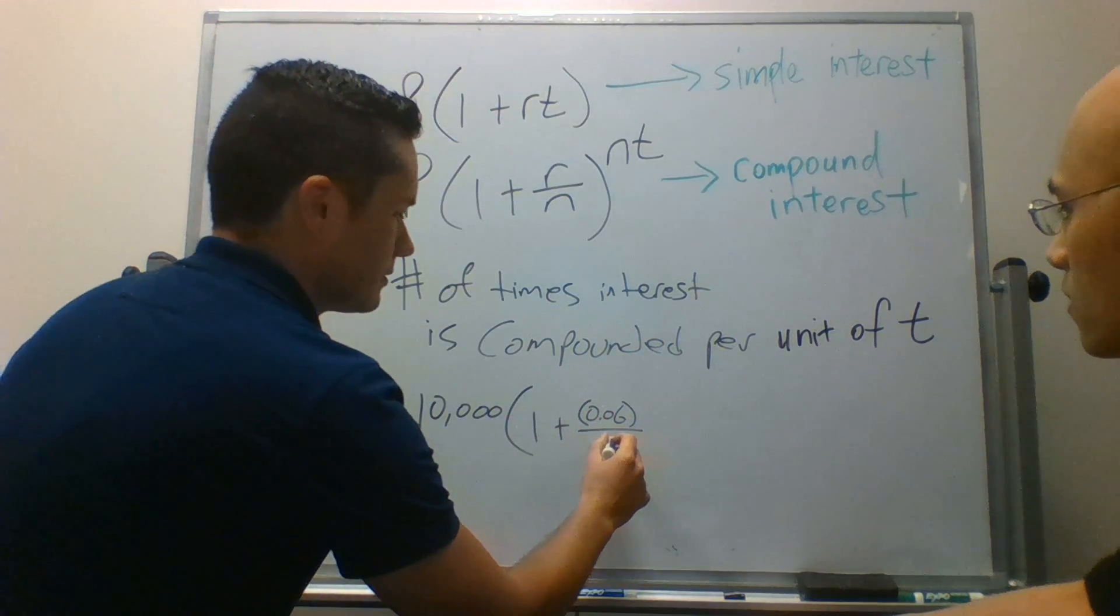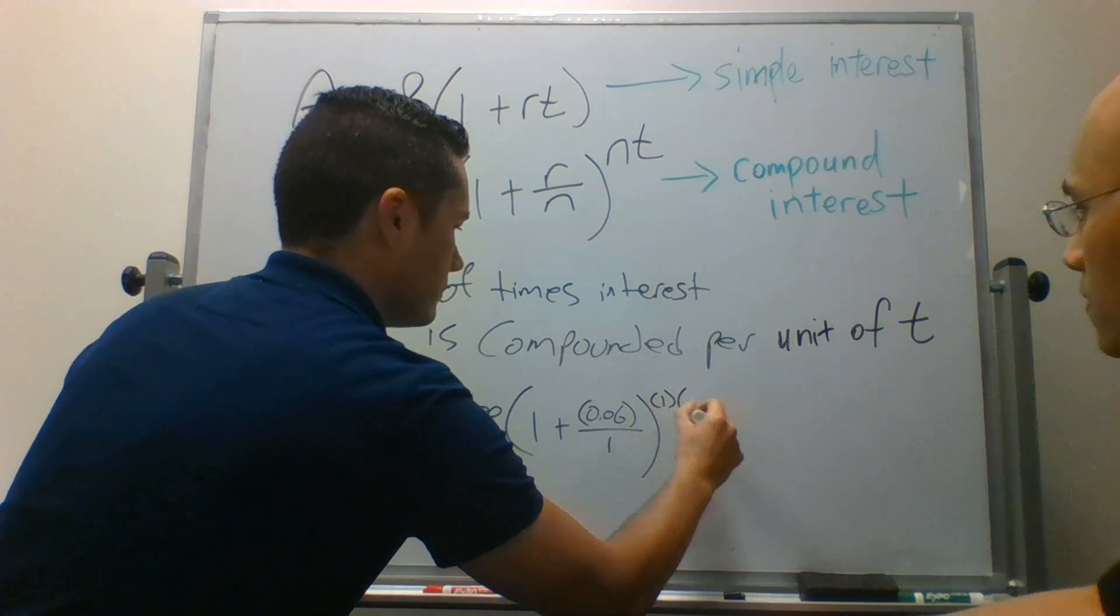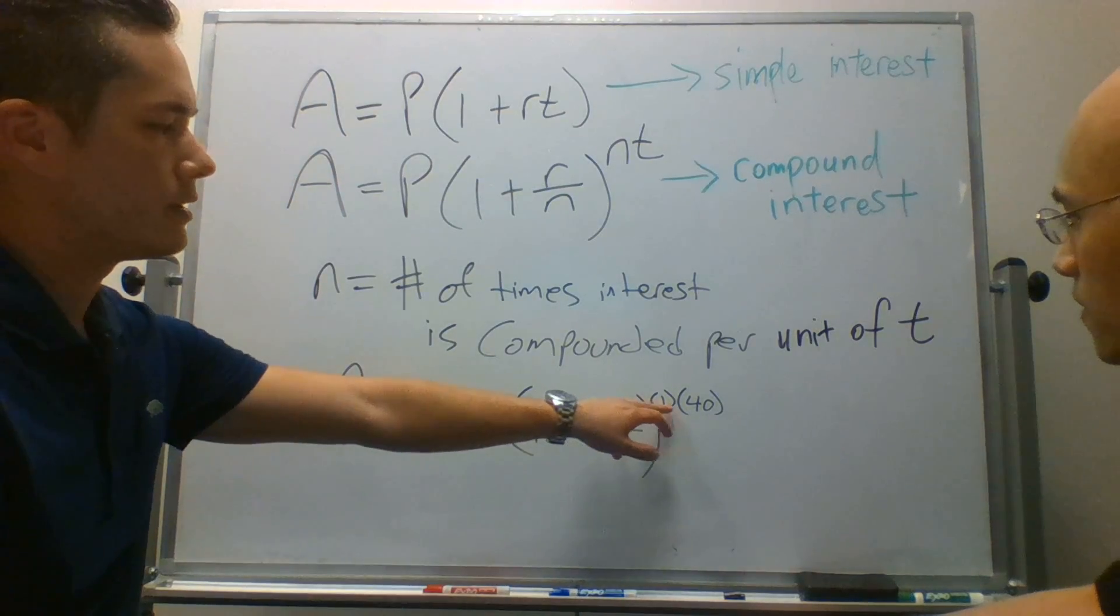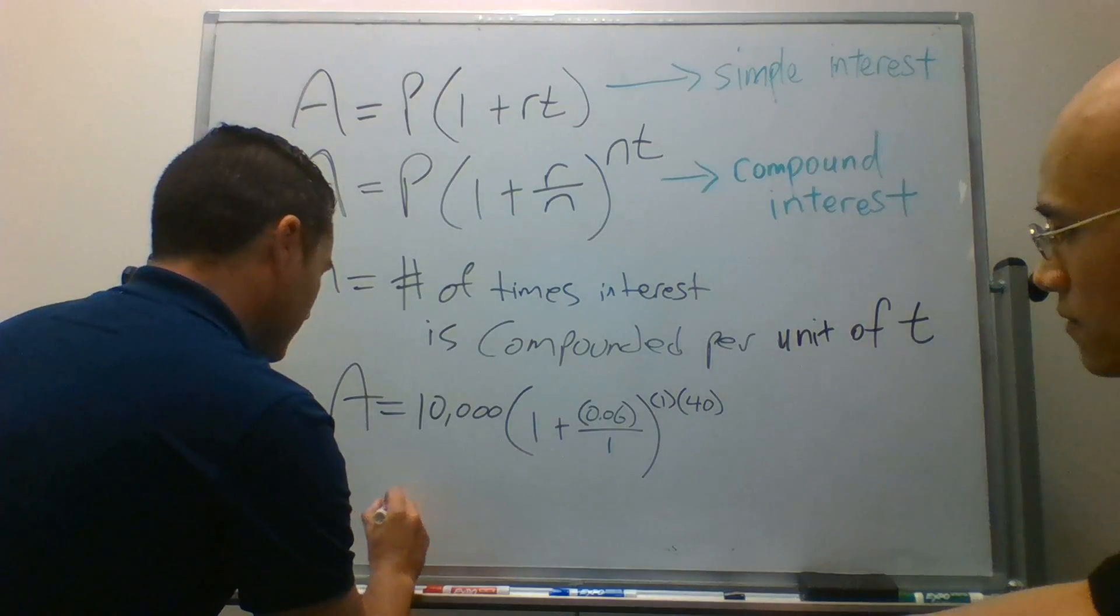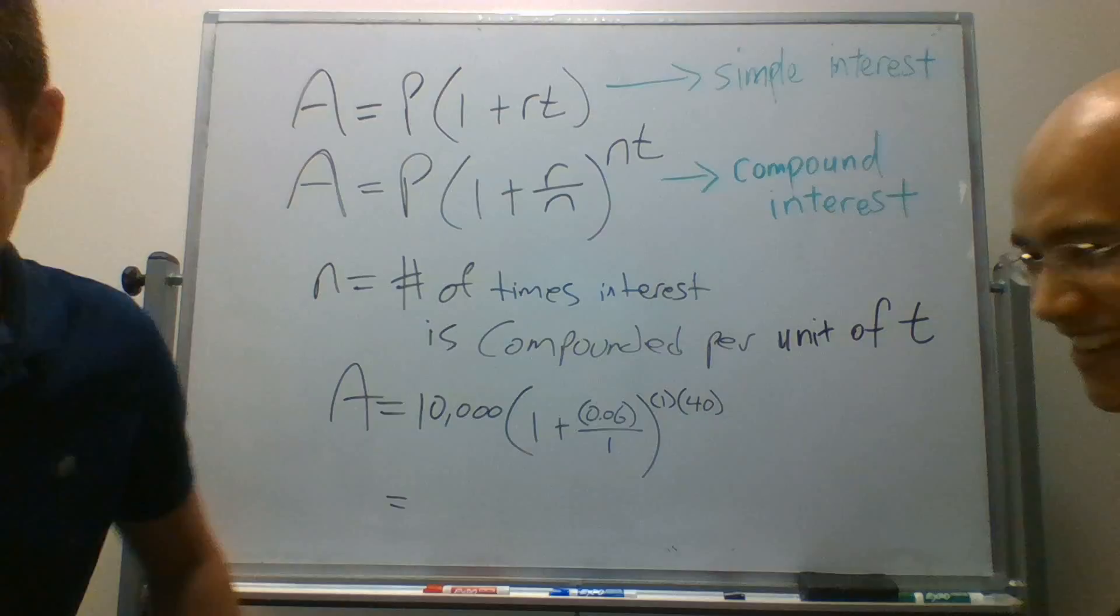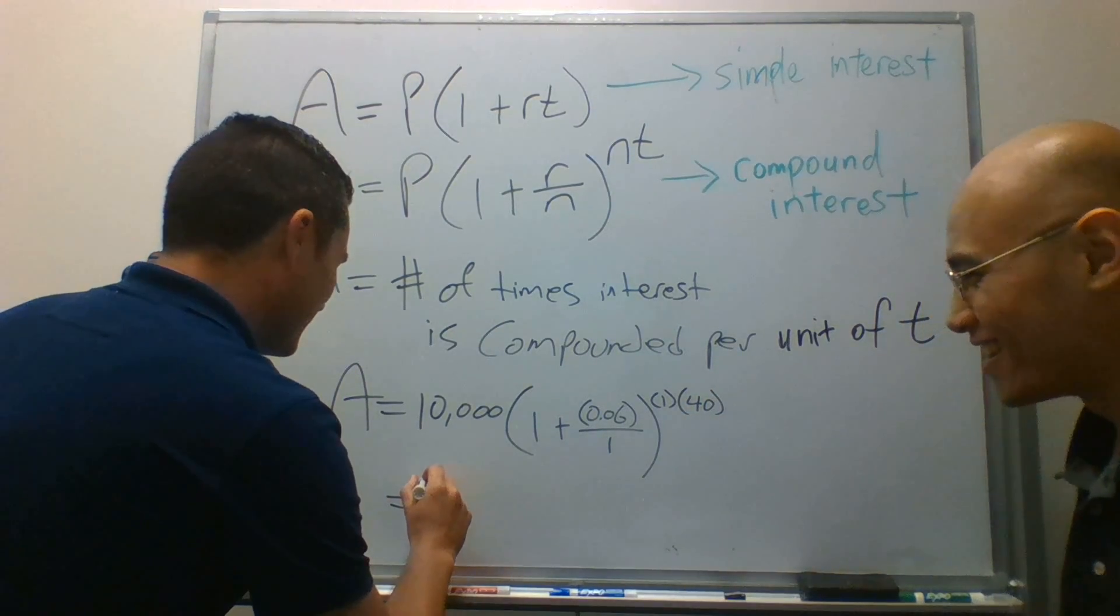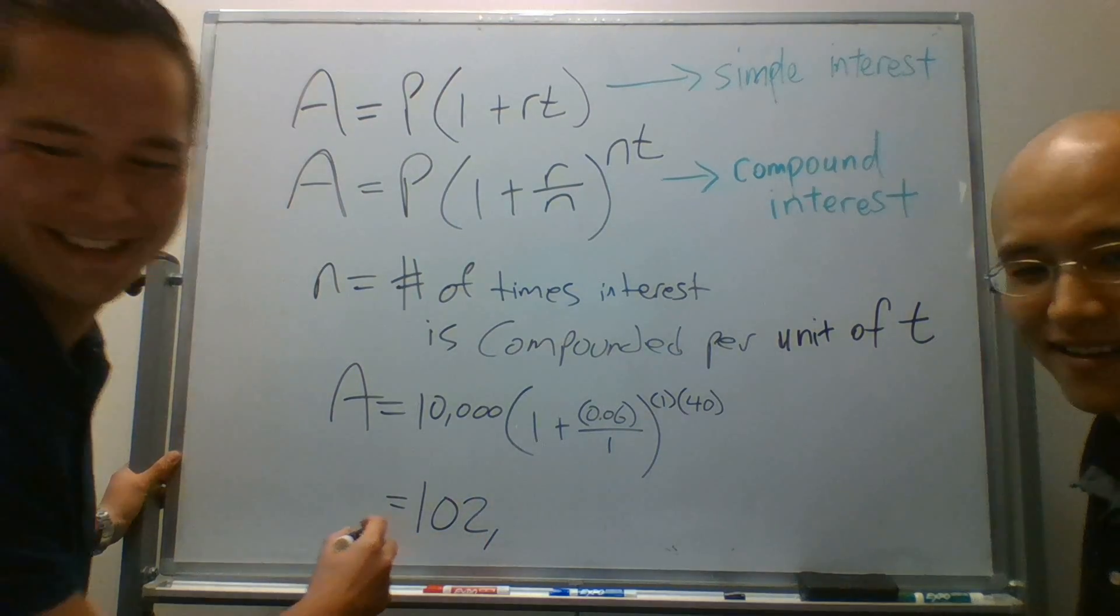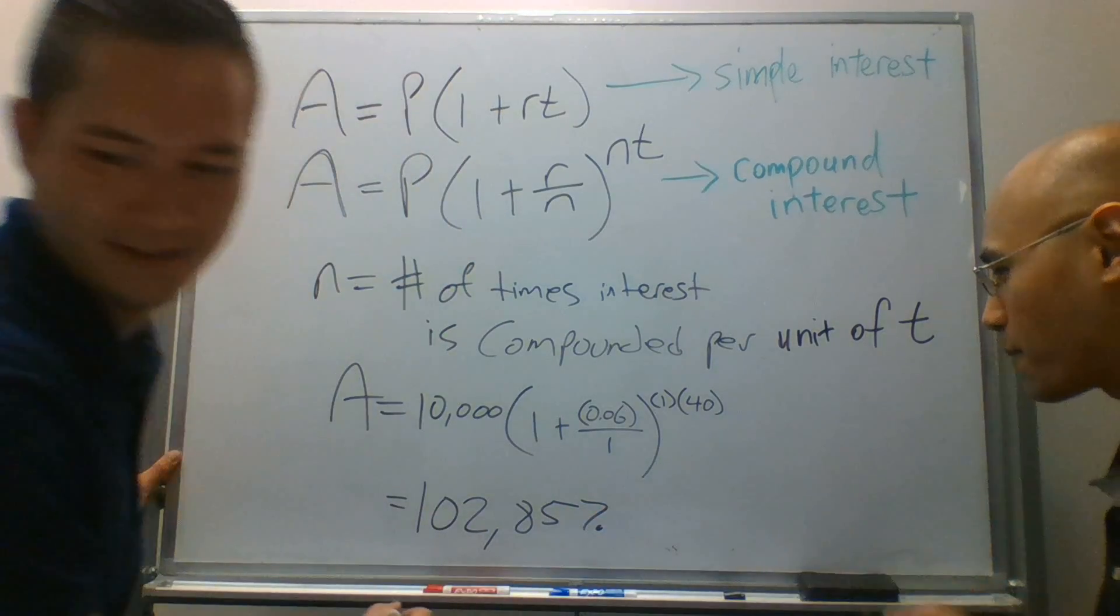Compounded once per year, so we'll just divide it by one. And again, once per year, but we're doing it for 40 years. So I'm going to refer to my notes because I don't have a calculator. That's all right. We're prepared. Are you ready for how different this is going to be? This is really the magic of compound interest right here.